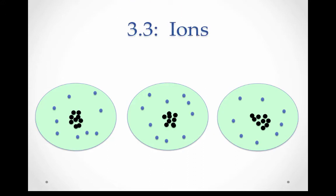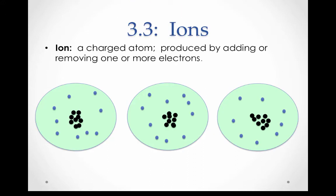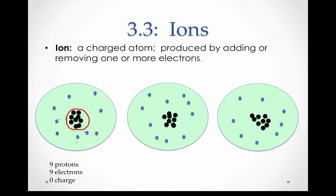Let's begin with ions. An ion is a charged atom. It's charged because one or more electrons has been added or removed from the atom. We have three atoms shown here. In the first atom, we have nine protons and nine electrons. This has an even balance of positive and negative charge. Therefore, it's neutral — it is not an ion.